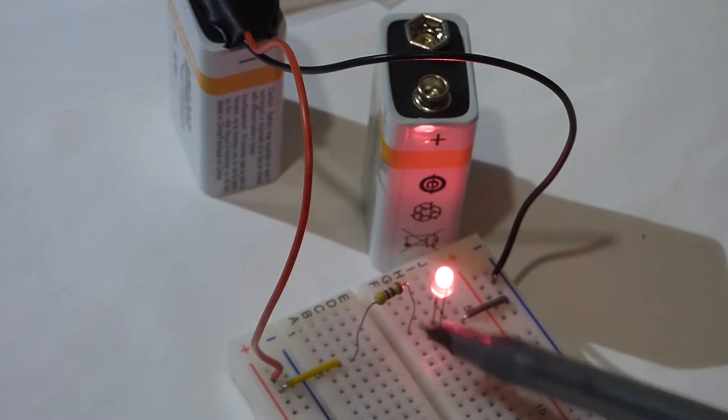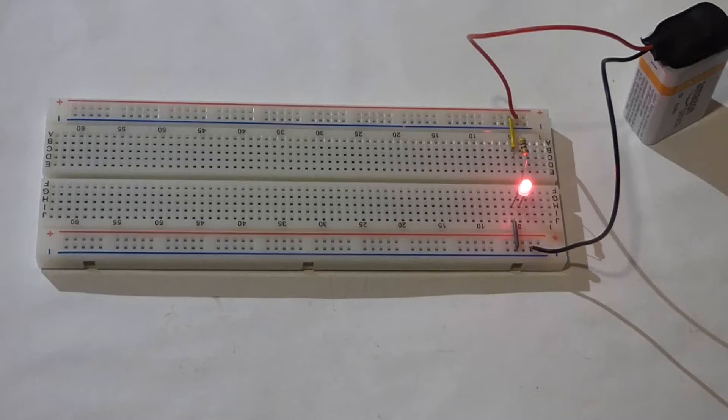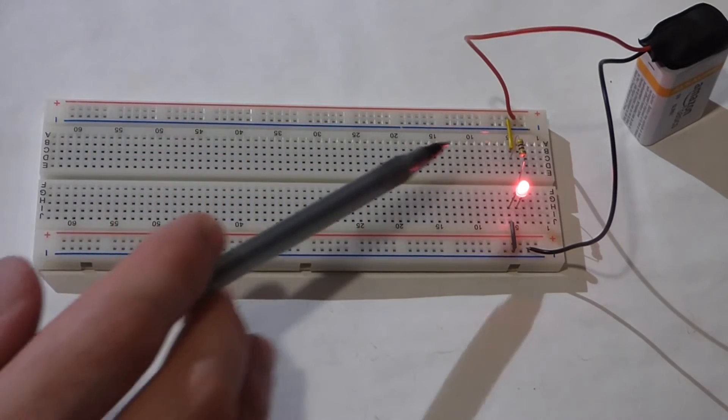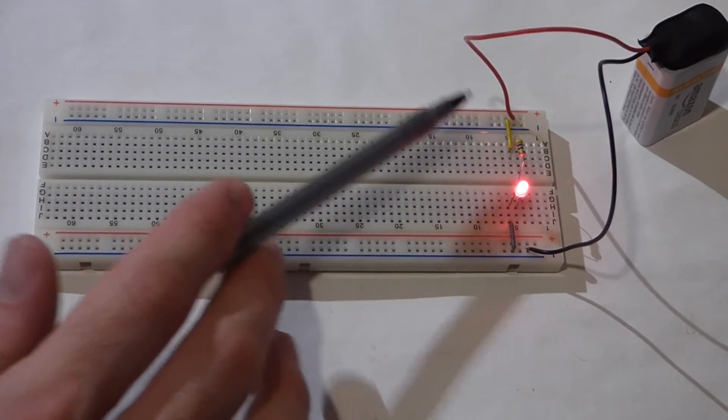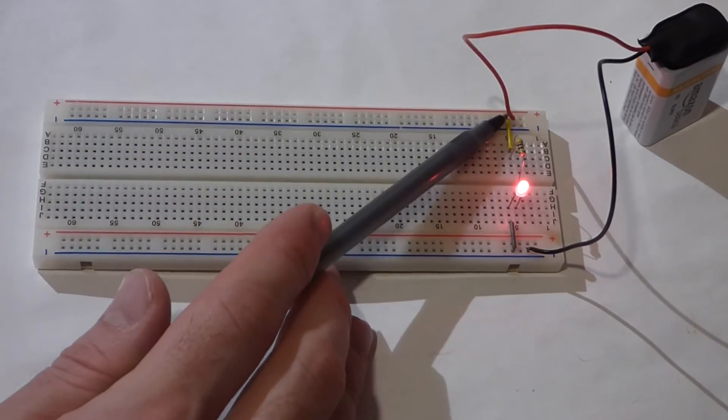So this is the breadboard. As you can see I just inserted the components and they connect to each other to complete the circuit. To begin with we have the red wire that comes out of the battery to the breadboard. So this connects to the positive terminal of the battery.